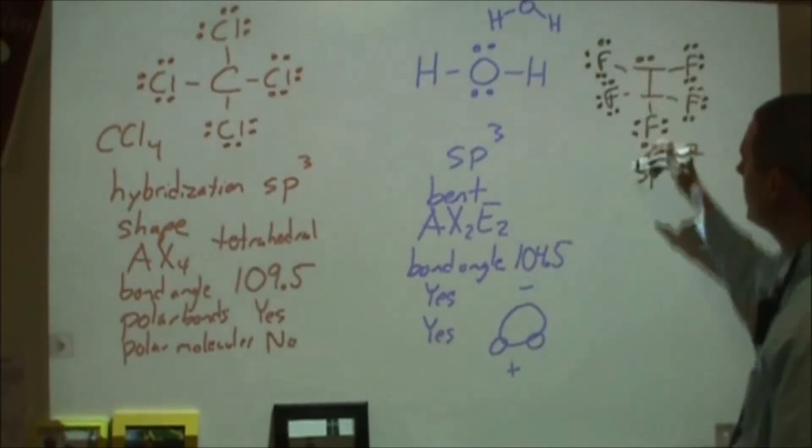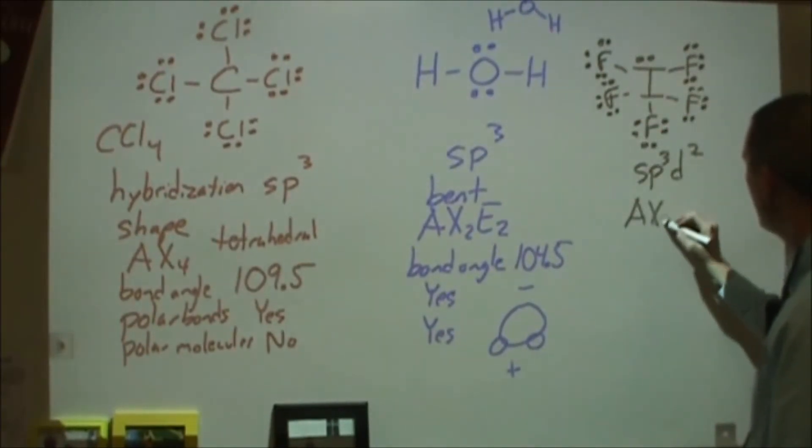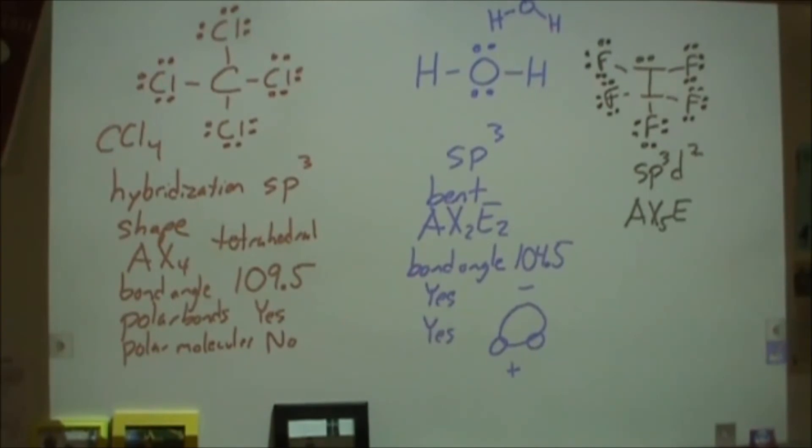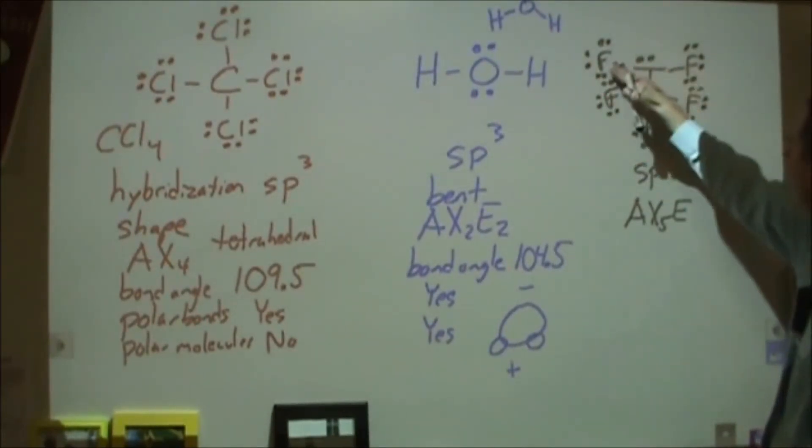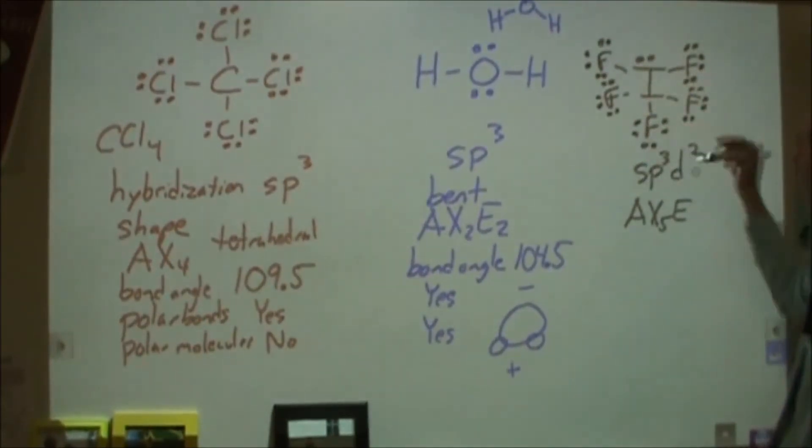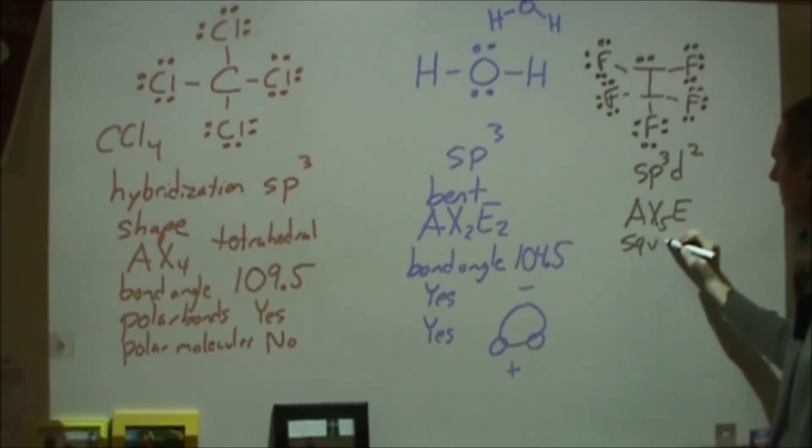The shape of this, there's six things attached here. So we're looking at an AX5E. So we're in the octahedral set of shapes. So we're looking at octahedral, square pyramidal, and square planar. This one would be square pyramidal. So we have our square here, our lone pair, and then our pyramid down here. Square pyramidal.